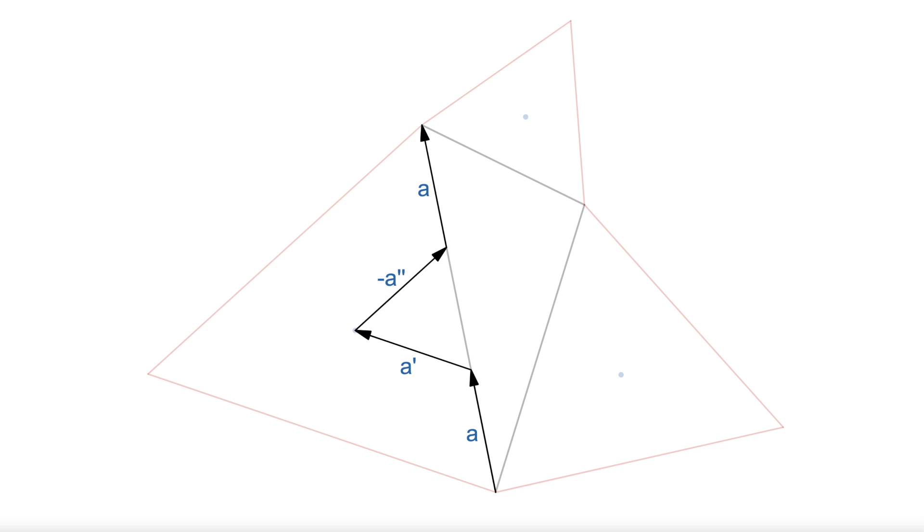Using this system of vectors and rotations, we can express the vector between the first pair of centers as negative a double prime, plus a, plus b, plus b prime. And the vector for the second pair as negative b double prime, plus b, plus c, plus c prime.